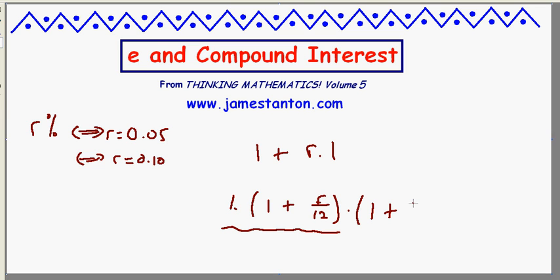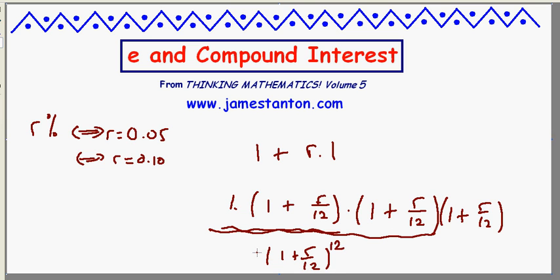After three months, I'll have all of this, plus R over 12% of that as well, and so on. So after one year, I'll have 1 plus R over 12 for 12 months, times my original $1.